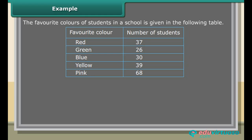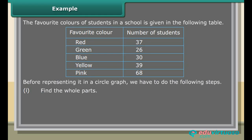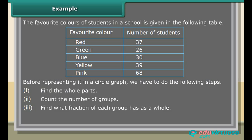Example: The favorite colors of students in a school are given in a table. Before representing it in a circle graph, follow these steps: 1. Find the whole parts. 2. Count the number of groups. 3. Find what fraction each group has as a whole. 4. Find the central angle and draw the graph according to it.